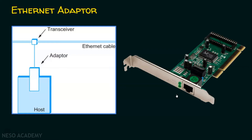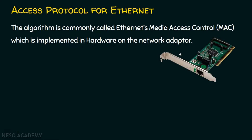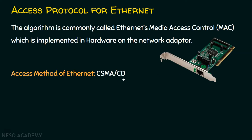Let's see the access protocol for Ethernet. The algorithm is commonly called Ethernet Media Access Control — the MAC algorithm — which is implemented in the hardware of the network adapter. The access method used by Ethernet is CSMA/CD, that is Carrier Sense Multiple Access with Collision Detection. We have already covered this technique in one of the previous lectures.